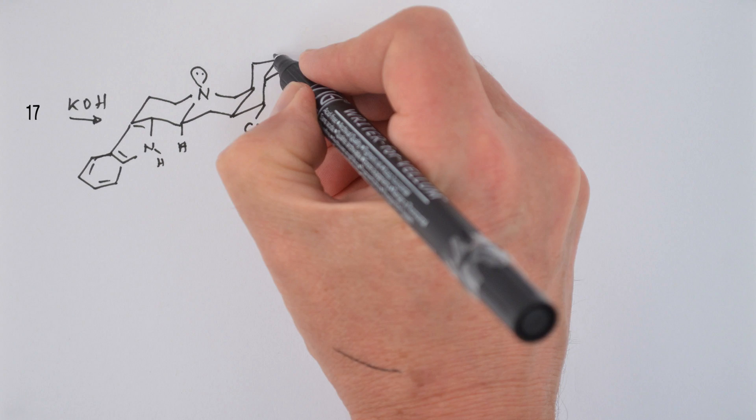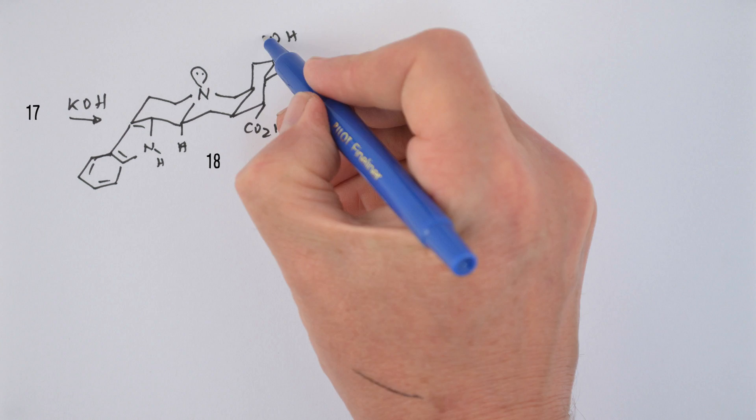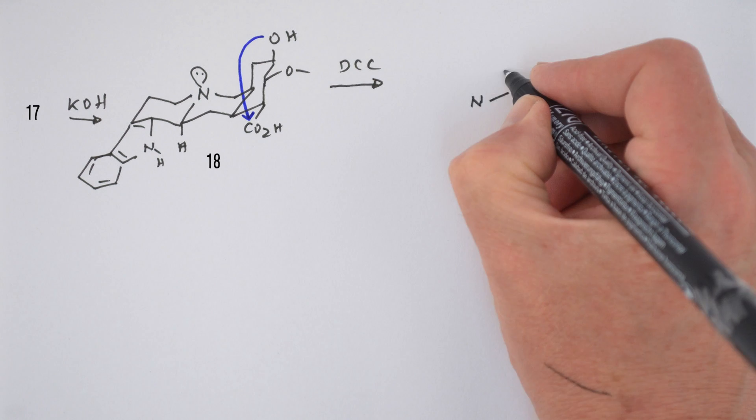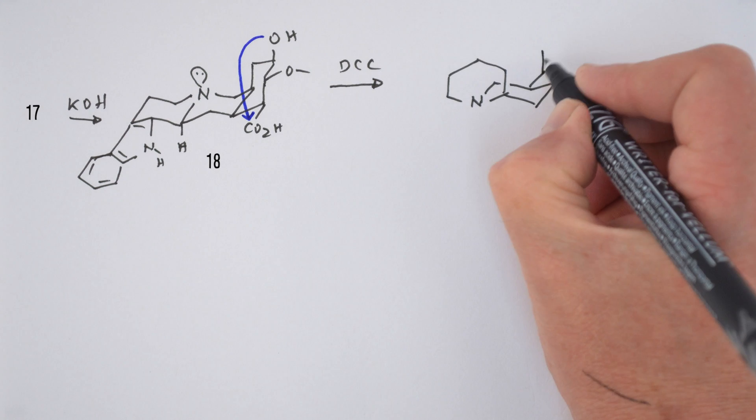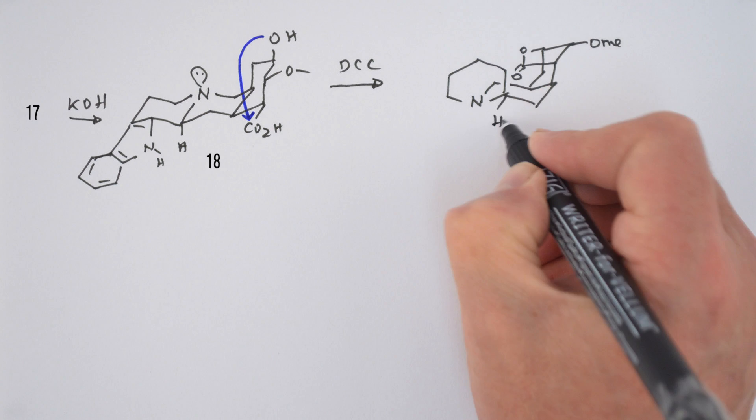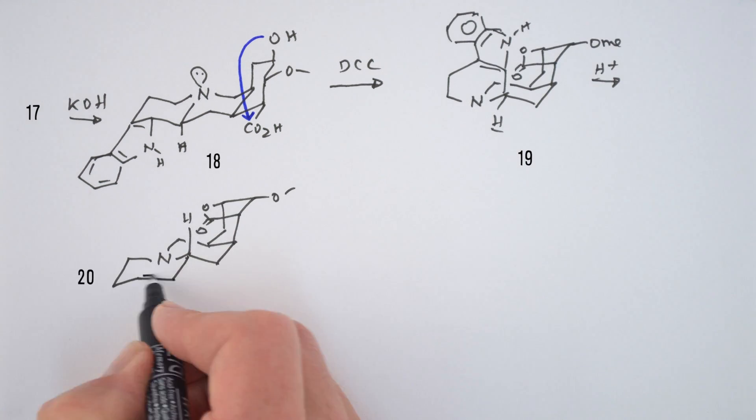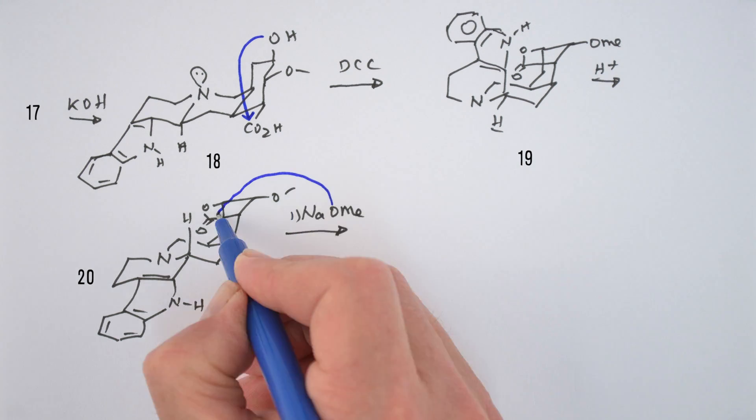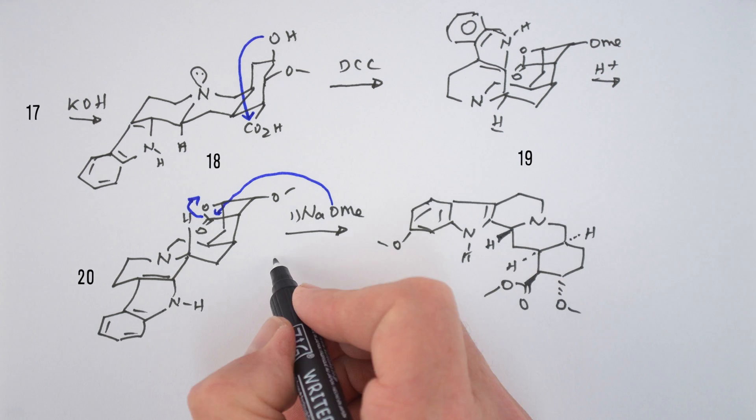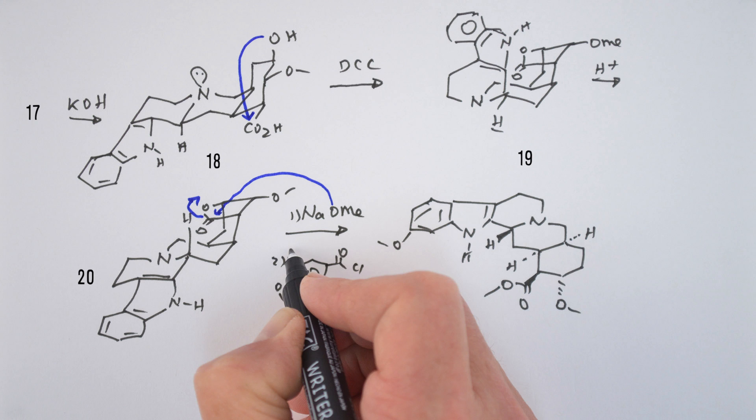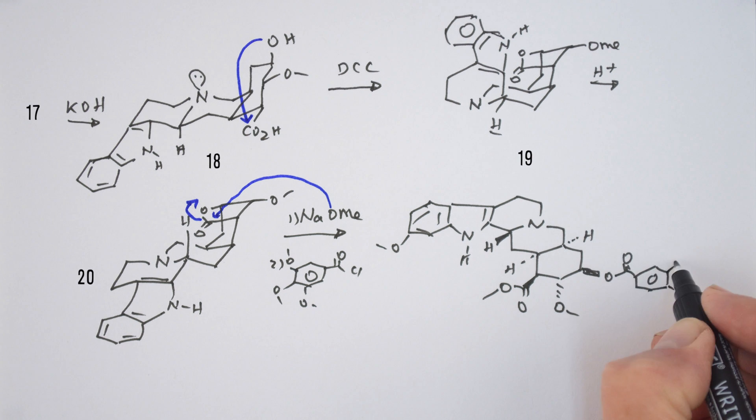So, potassium hydroxide hydrolysis of 17 gave hydroxy acid 18. DCC, a reagent that had found great use in closing the beta-lactam ring of penicillin a few years earlier, formed the lactone 19. Treatment with acid equilibrated to 20. Opening of the lactone ring with sodium methoxide, followed by treatment with acid chloride of eudismic acid gave reserpine.